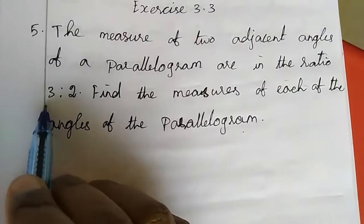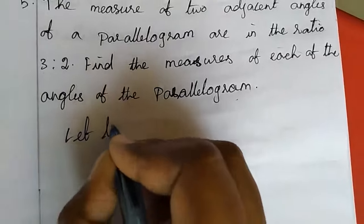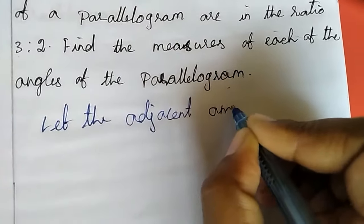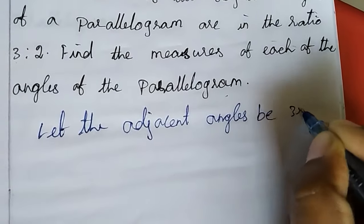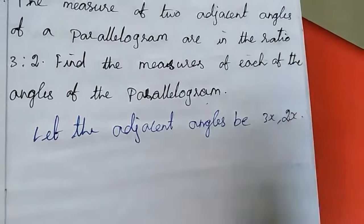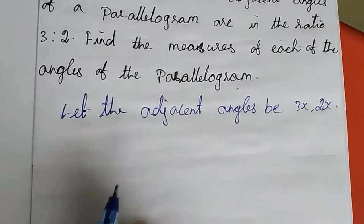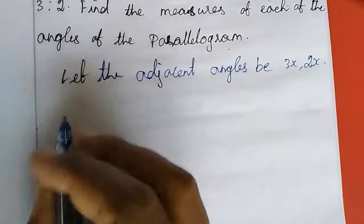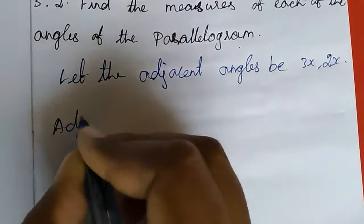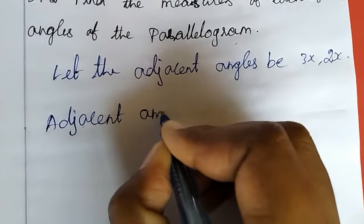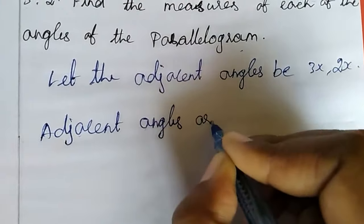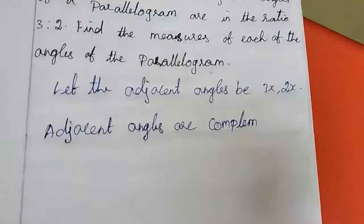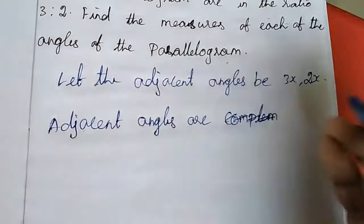Adjacent angles are in the ratio 3 is to 2. Let the adjacent angles be 3x and also 2x. We know in a parallelogram, adjacent angles are supplementary. If you add these two angles, you get 180 degrees. Adjacent angles are supplementary.